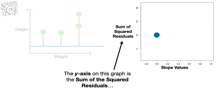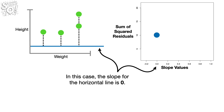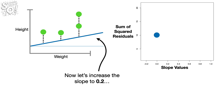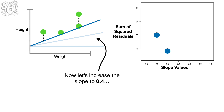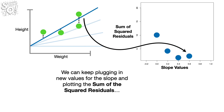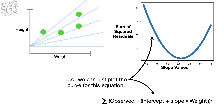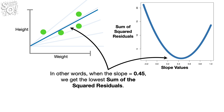The y-axis on this graph is the sum of the squared residuals, and the x-axis represents different slope values for the fitted line. The slope for the horizontal line is 0. Now let's increase the slope to 0.2 and calculate a new value for the sum of the squared residuals. Now let's increase the slope to 0.4. We can keep plugging in new values for the slope, or we can just plot the curve for this equation. We can see that the best fitting line is at the bottom of the parabola — when the slope equals 0.45, we get the lowest sum of the squared residuals.